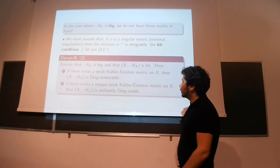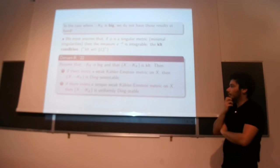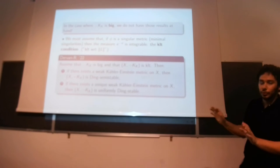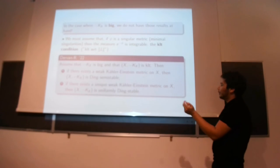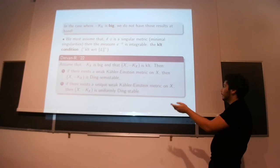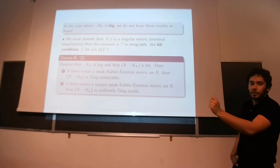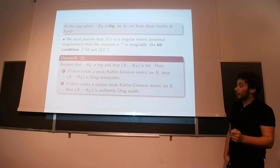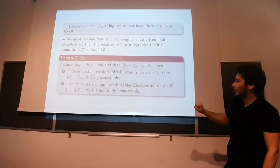So the result that we show is the one direction of the Yau conjecture in the big case. So, the work of Tamash and Kuwata that I mentioned was the other direction, though they used a different notion of stability. That's going to show that if X and minus KX is big, and if minus KX is klt in that sense, then if there exists a weak Kähler metric on X, then X is Ding-semistable, and if there exists a unique weak Kähler metric on X, then X minus KX is uniformly Ding-stable.